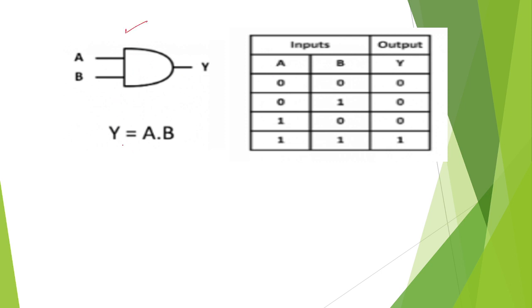The output is A into B, A multiplied with B, where the inputs are A and B. You can see: 0 multiplied with 0 gives 0, 0 multiplied with 1 gives 0, 1 into 0 gives 0, and 1 into 1 gives 1.